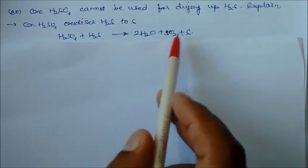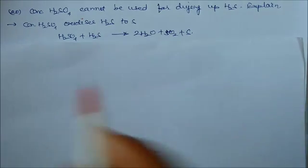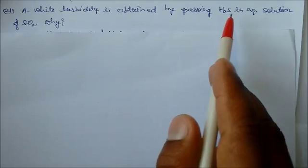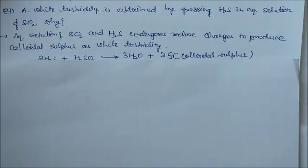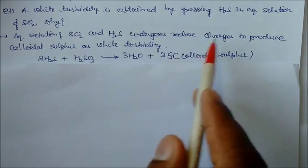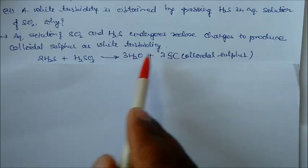Why is turbidity obtained by passing H2S in aqueous solution of sulfur dioxide? Because in aqueous solution of SO2, H2S undergoes redox changes to produce colloidal sulfur as white turbidity. The reaction is H2S plus H2SO3 giving sulfur.